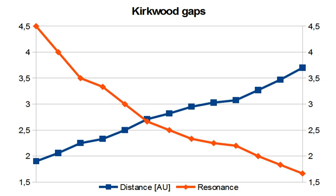For example, there are very few asteroids with semi-major axis near 2.50 AU, period 3.95 years, which would make three orbits for each orbit of Jupiter — hence called the 3-to-1 orbital resonance. Other orbital resonances correspond to orbital periods whose lengths are simple fractions of Jupiter's.